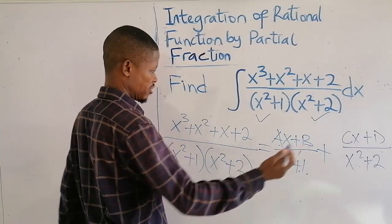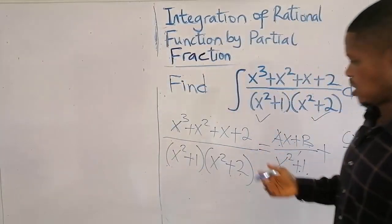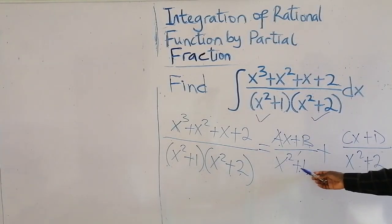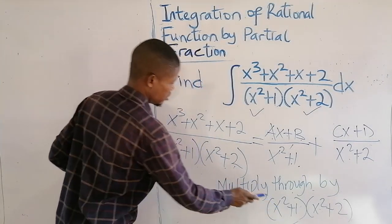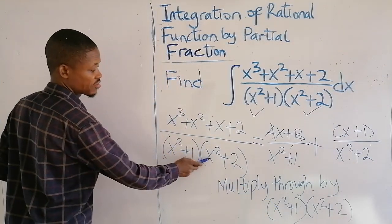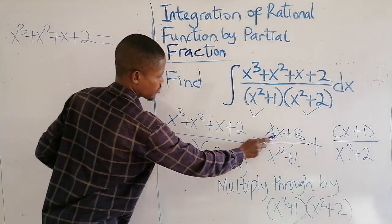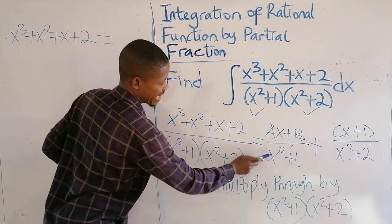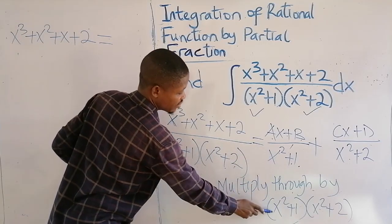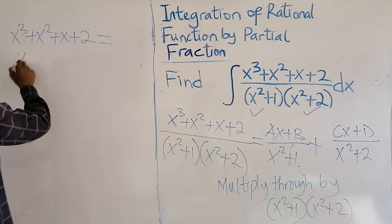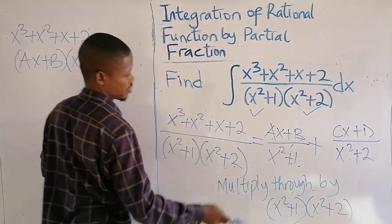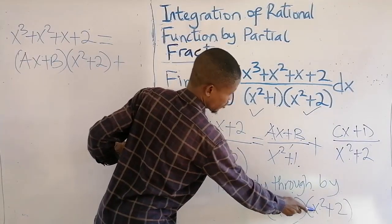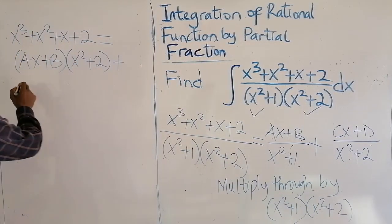We multiply through the equation by the common factor, x squared plus 1 times x squared plus 2. On the left-hand side, times the common factor — these two cancel. Then this one also times the common factor — x squared plus 2 cancels.